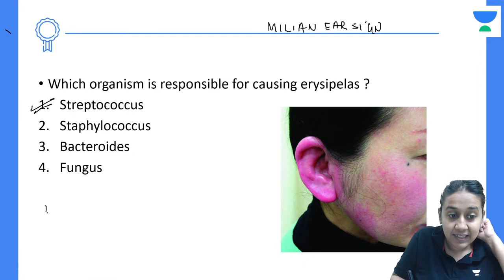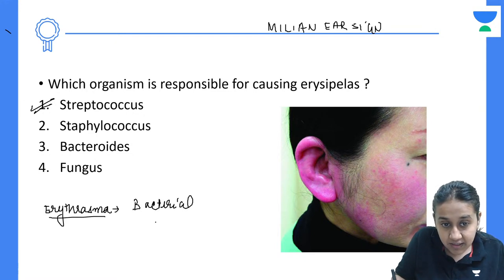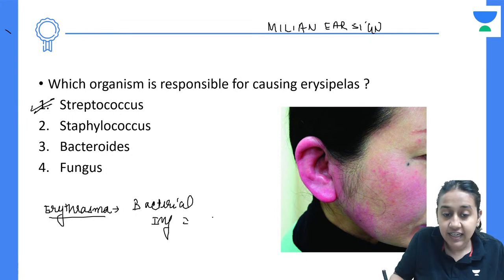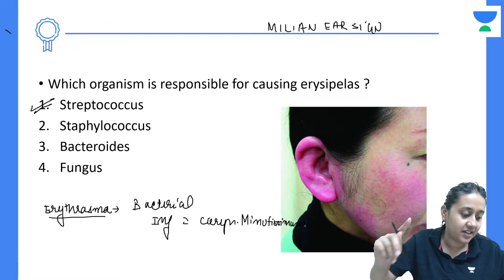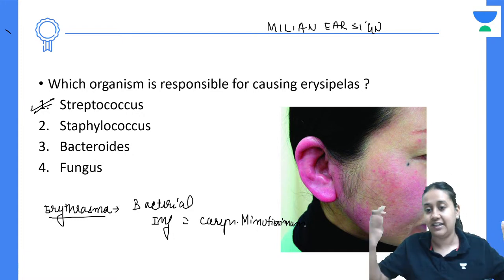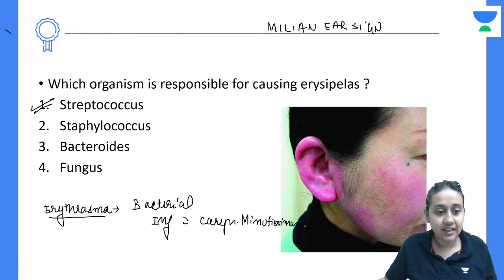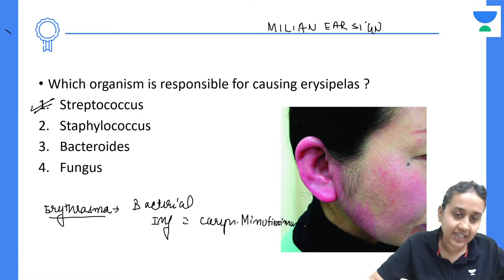Erythrasma is a completely different condition — a bacterial infection secondary to Corynebacterium minutissimum — with a characteristic coral-red appearance under fluorescence. Erythrasma and erysipelas are two different entities.